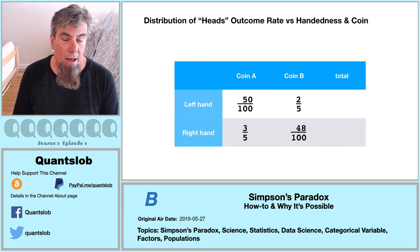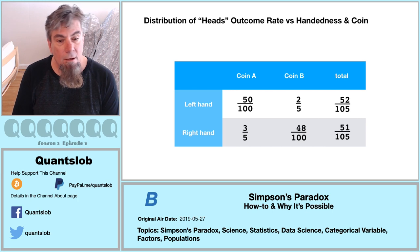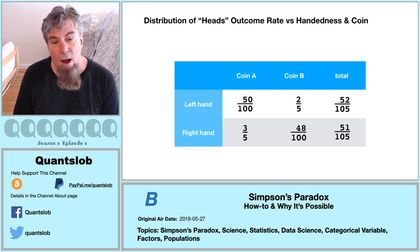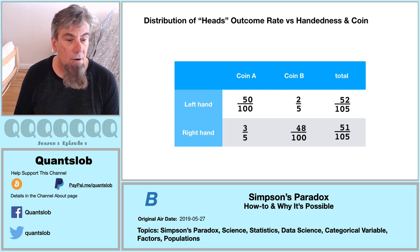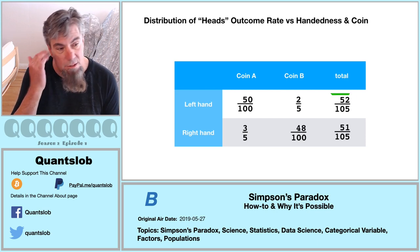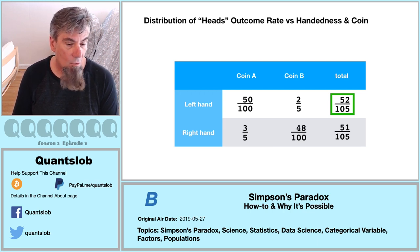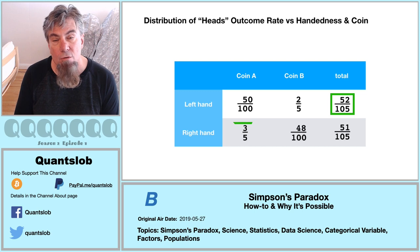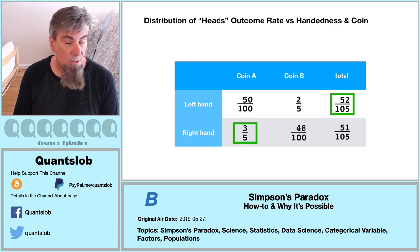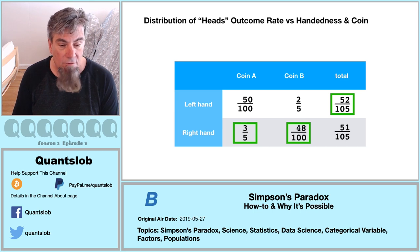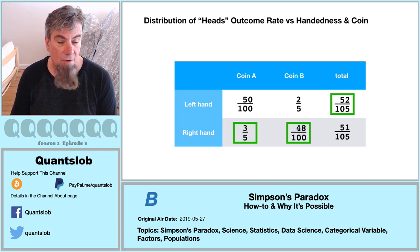Three-fifths and two-fifths does the trick, respectively — it completes the paradox. We arrive at a situation where left-handed flips yielded a higher ratio of heads than right-handed flips: 52 over 105 is greater than 51 over 105. However, for both coin A and coin B, the opposite is true — right-hand flips, not left-hand flips, produced a higher ratio of heads.